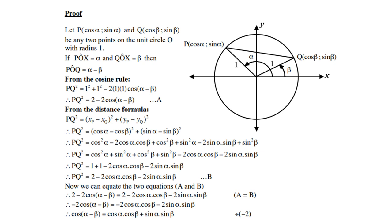Now we can equate the two equations: the right-hand side of A equals the right-hand side of B. Simplifying further — collecting like terms and dividing by minus 2 — you end up with cos(alpha minus beta) equals cos α times cos β plus sin α times sin β. Remember, you don't have to know this for exam purposes, but please take some time to work through it and make sure you understand this proof.